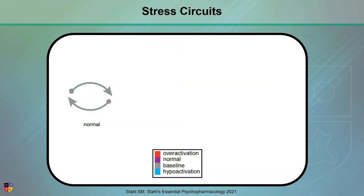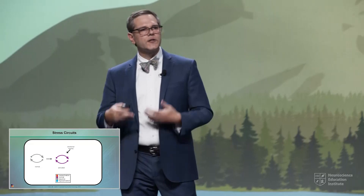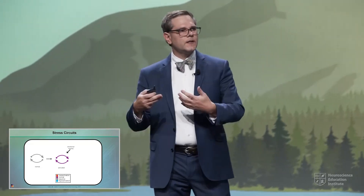In this oversimplified, over-reductionistic cartoon, which I love for a number of reasons, we see a normal circuit shown on the left. We know that when we're presented with any type of trauma or stress, even in normal circumstances, we get an activation of that circuit, as we would expect — as is physiologically relevant, proportional, and expected.